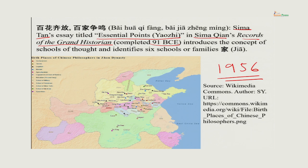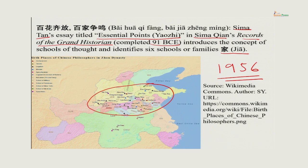He identifies six schools or families — the word used is chia, meaning family or home. Looking at the map, you can notice that the concentration of these philosophers is geographically along the Yellow River valley, which was the core of Chinese civilization. On the other hand, states like Qin and Chu, which are geographically larger, did not produce as many philosophers. So the Yellow River valley was the core of Chinese philosophy.